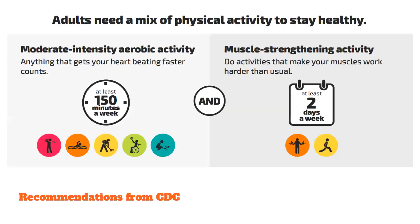The CDC recommends at least 150 minutes a week of moderate intensity aerobic activity — golfing, swimming, raking, playing basketball, gardening, going for a walk. That gets your heartbeat going a little bit faster and maybe you break a light sweat. That's about 20 to 30 minutes a day. I think there's time within the day to break that up into even 10 minutes here, five minutes there — something to get yourself moving that can add up really quickly.